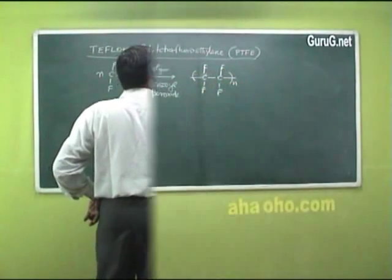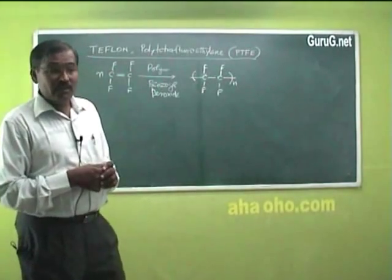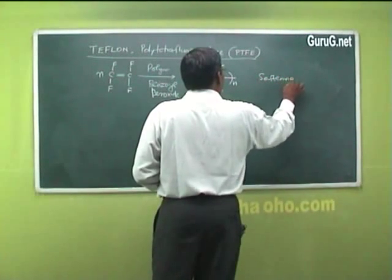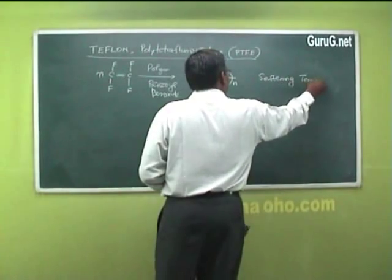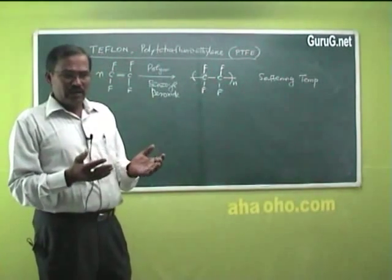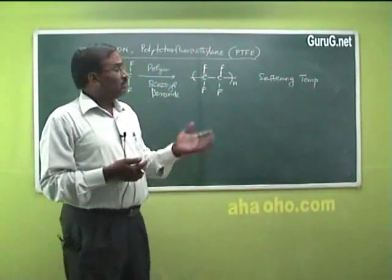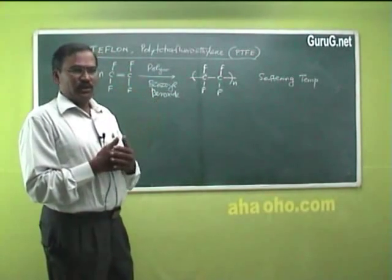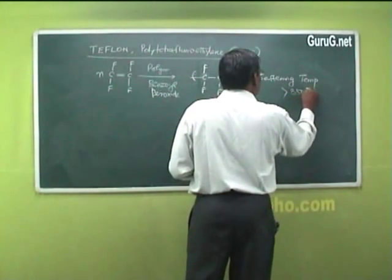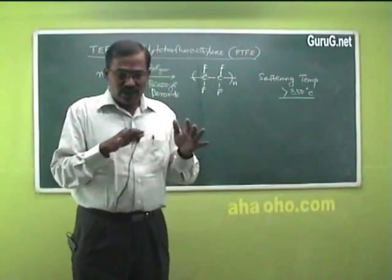Teflon is white in color, very tough unlike other conventional polymers, and it is flexible. It has an interesting property — the softening temperature. For any polymer, the softening temperature is important. According to our application, we can choose a polymer with low or high softening temperature. Teflon is used for high-temperature applications, and thereby its softening temperature is greater than 350 degrees Celsius — only above 350°C does it soften.